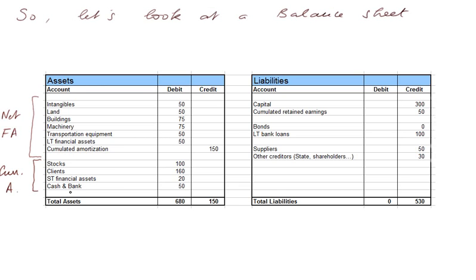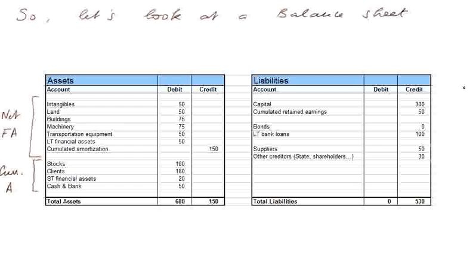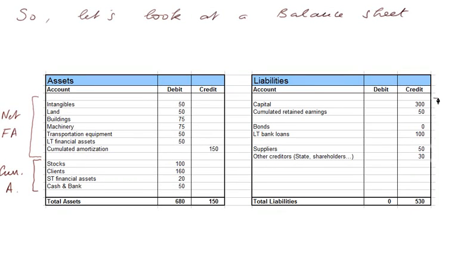And on the liability side, we have three parts: value or financing coming from the owners, called the net worth, also called the equity. Secondly, financing that comes from borrowing from a bank or from markets, that I call costly debt, and usually we just call them the debts. And a third item, which I call the free debt, which are the credits that naturally come from operations, from suppliers and other creditors.